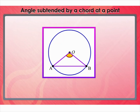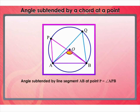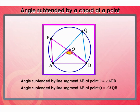In the same circle with the same chord AB, take two points P and Q on the circle. To find the angle subtended by chord AB at point P, join AP and BP — giving angle APB. Similarly, to find the angle subtended at Q, join AQ and BQ — giving angle AQB.